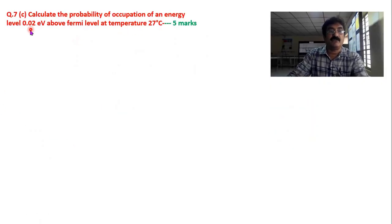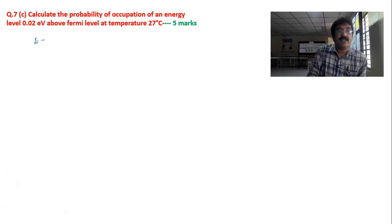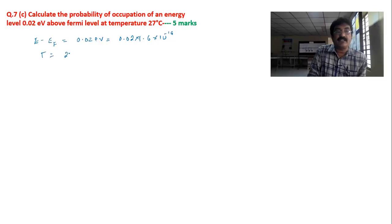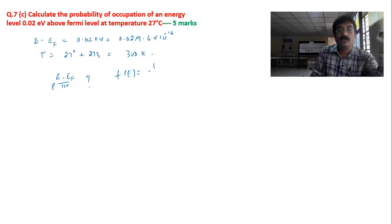Question 7C: calculate the probability of occupation of an energy level 0.02 electron volt above the Fermi level at 27 degrees centigrade. First, check whether E minus EF is positive or negative. Since it is above the Fermi level, E minus EF is positive: 0.02 eV. Convert to joules: multiply by 1.6 × 10^−19. Temperature is 27°C + 273 = 300 Kelvin. We need to find F(E) using the formula F(E) = 1 / [e^((E−EF)/kT) + 1].